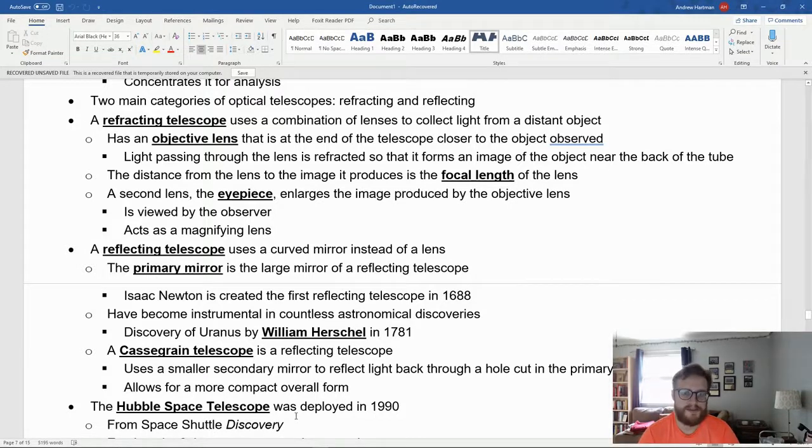A second lens, the eyepiece, then enlarges the image produced by the objective lens. The eyepiece focuses on the image that the original objective lens creates and enlarges that image, acting as a magnifying lens. You view through the eyepiece, of course.